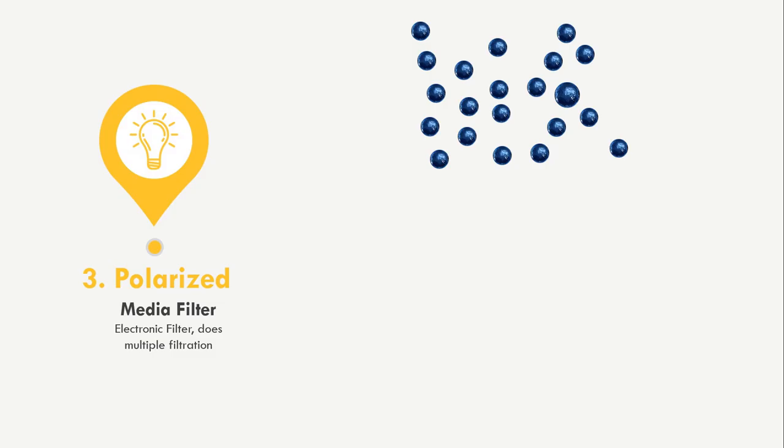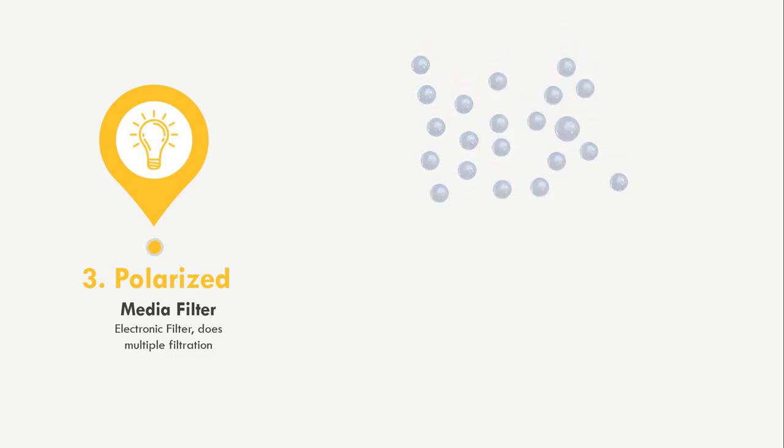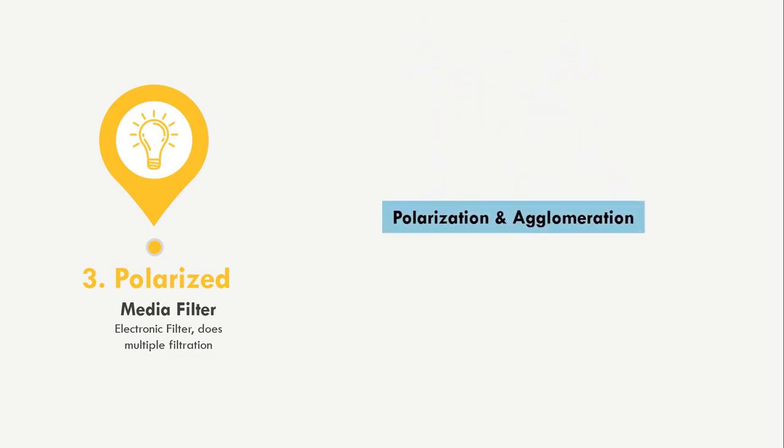The third filter is the Polarized Media Filter. This is different from a negative ion generator and does not cause generation of ozone gas. Filtration through polarized media is a multi-step process: first, impingement (same function as the pre-filter); second, polarization, where airborne particulates get polarized due to high voltage of 6,000V to 75,000V; third, agglomeration, where polarized particulates strike the filter or attach to each other to form larger particles.